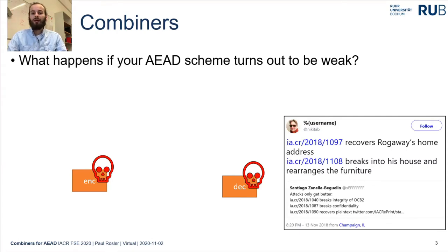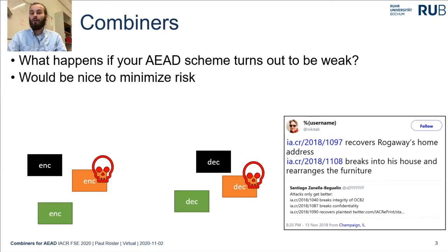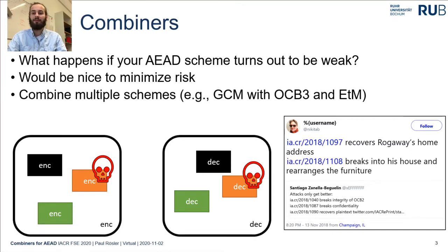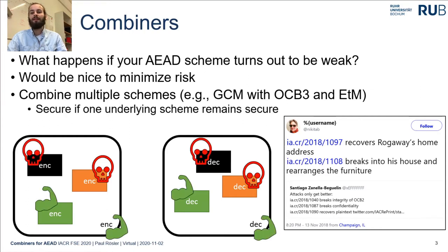So what should we do if such a thing can happen? We would like to minimize risk. One way to minimize risk is to combine multiple AEAD schemes in which we trust, so that if either of these AEAD schemes afterwards turns out to be insecure, we can still hope that the other one remains secure. In this example, if we combine GCM with OCB3 and an AEAD scheme following the encrypt-and-MAC paradigm, we would like the entire combination to remain secure as long as only one of these schemes remains secure.